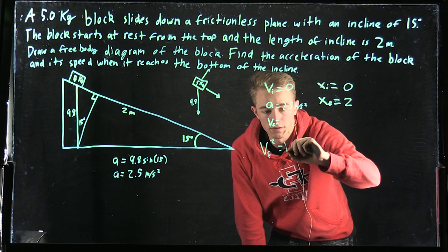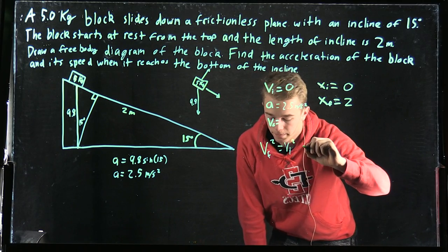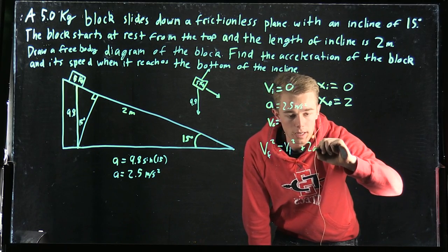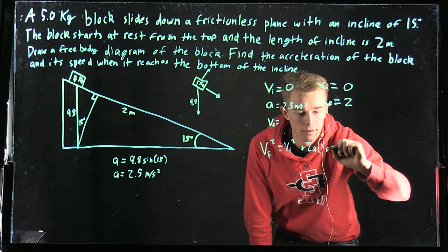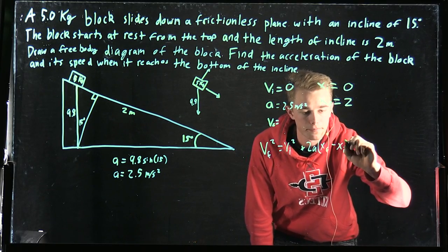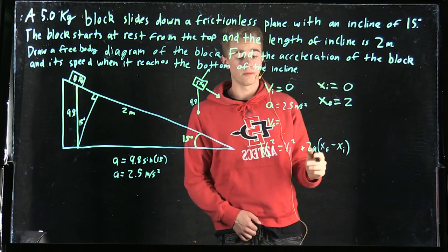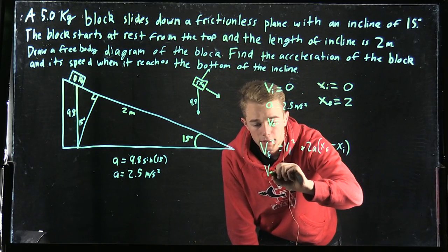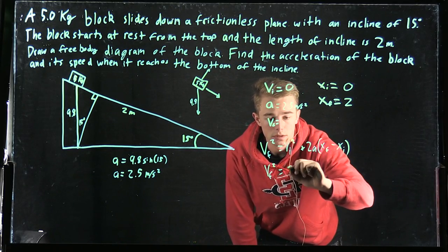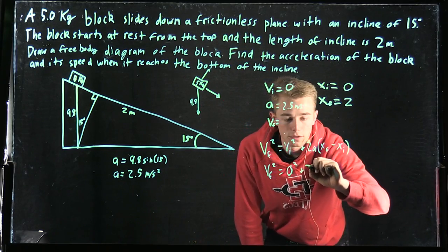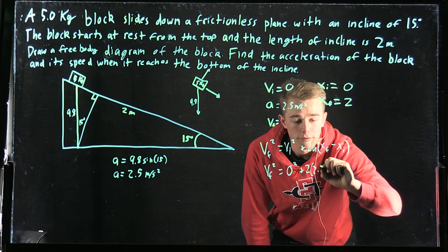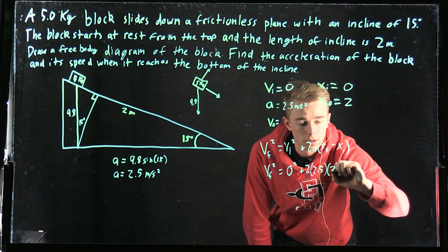Vf squared equals vi squared plus 2a times xf minus xi. Now we'll just go ahead and plug in those numbers. So we have vf squared equals 0 squared plus 2 times 2.5 times 2.